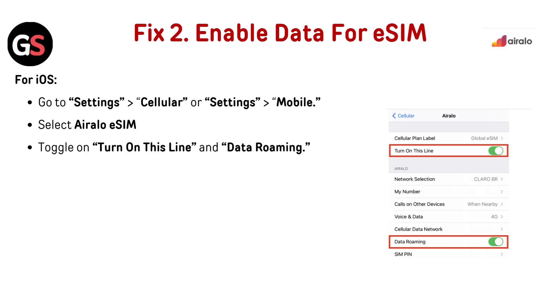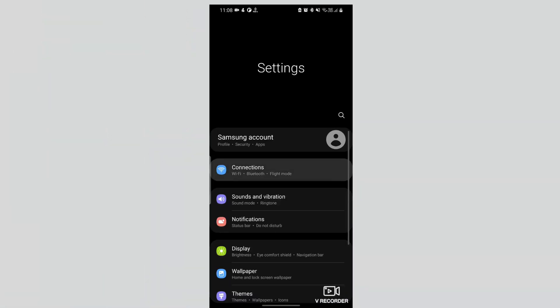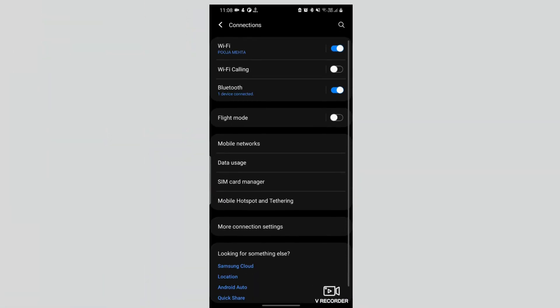Fix 2: Enable data for eSIM. For iOS, go to Settings then Cellular, or Settings then Mobile. Select Airalo eSIM, toggle on 'Turn on this line' and 'Data Roaming'. For Android, go to Settings then Network and Internet. Select Mobile Network, then click on eSIM.